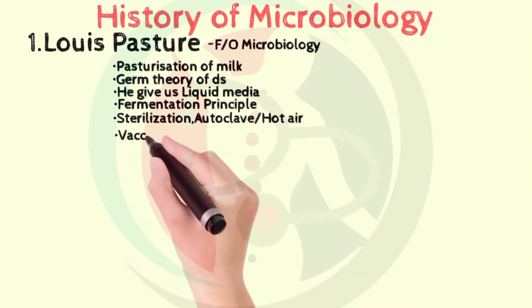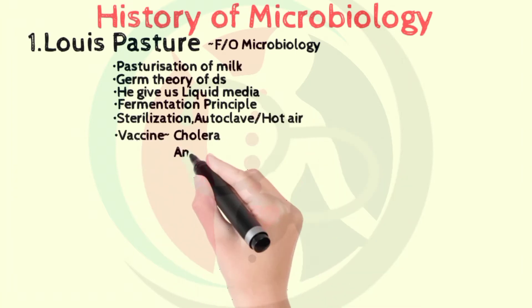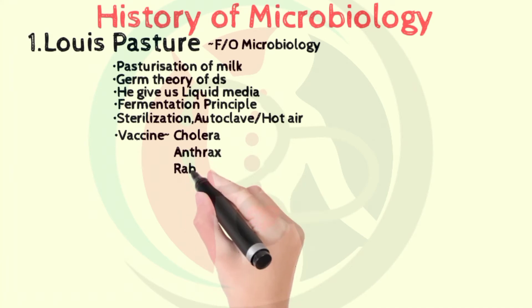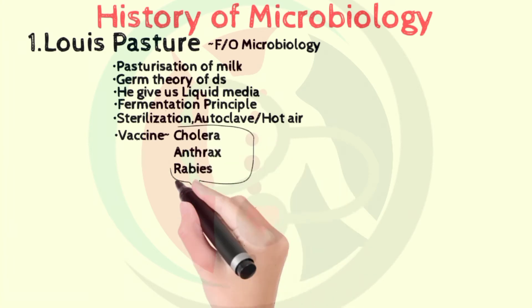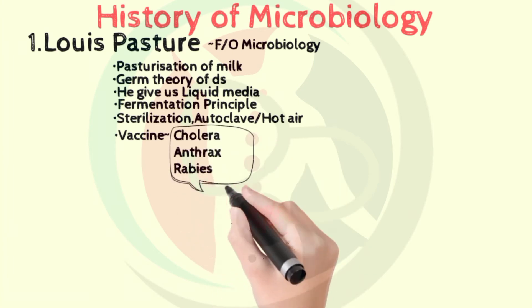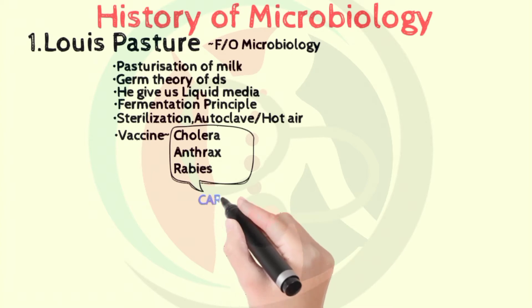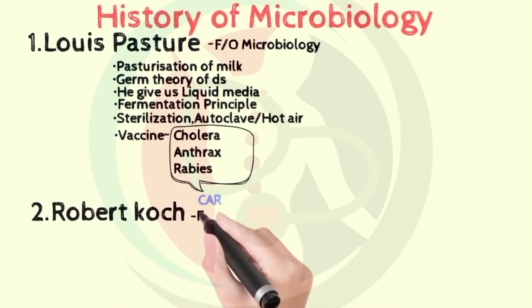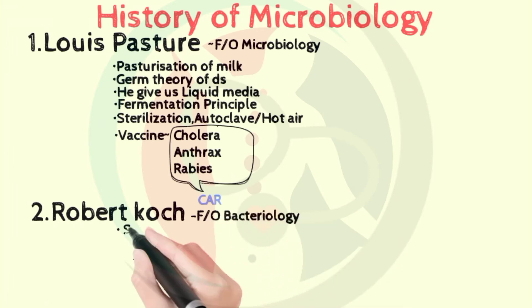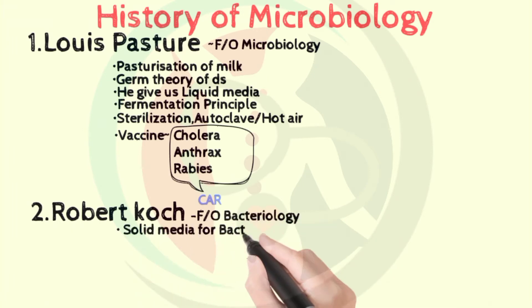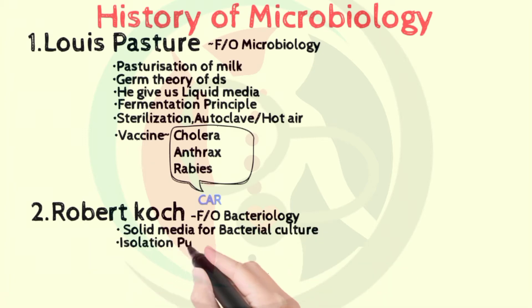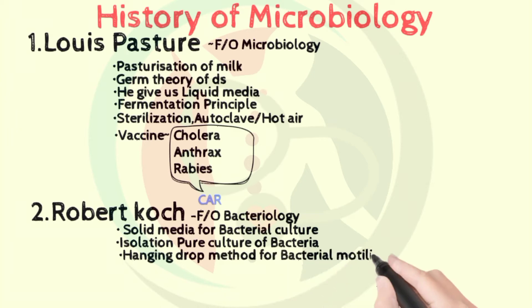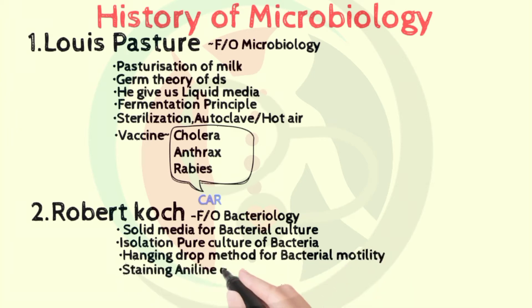A learning trick for these vaccines is C.A.R. His work on germ theory of disease also led him and his team to create vaccination. On the basis of this theory, disease-causing bacteria in TB and cholera were isolated by Robert Koch. Robert Koch, also known as the father of modern microbiology, used solid media for bacterial culture and isolated pure culture of bacteria. He tells us about the hanging drop method for bacterial motility and staining by aniline dye, the first use. Koch's phenomenon was demonstrated using TB in guinea pigs.